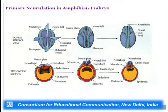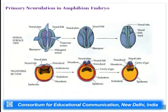Primary neurulation in amphibian embryos is similar to that in most vertebrates. These are different transverse sections and dorsal views showing the formation of neural folds, the neural groove, and then the neural folds closing together to form the neural tube separated from the epidermal tube. In the transverse sections one can see: the neural plate stage, the neural fold stage, and the neural tube stage.